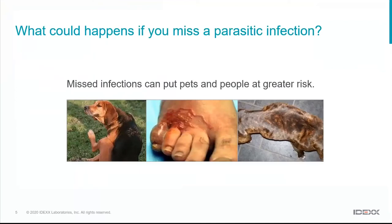There are real consequences to missing parasitic infections. Things like hookworms can cause larval migration. Parasites in younger animals may cause ill thrift and poor weight gain, while significant burdens in older animals may cause weight loss and anaemia. There is also the zoonotic aspect — visceral larva migrans with roundworms, and cutaneous larva migrans with hookworms, which can burrow through the skin, making this a public health concern.